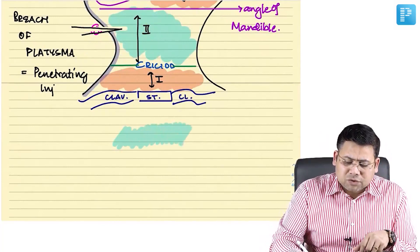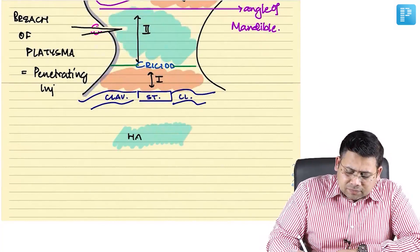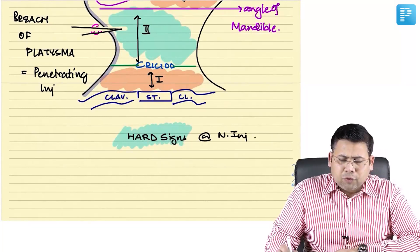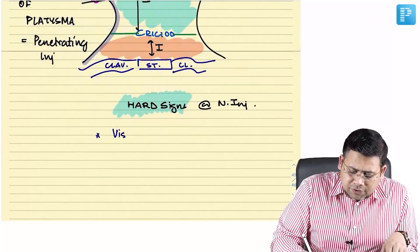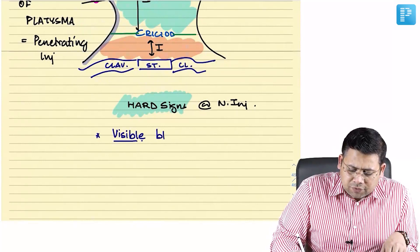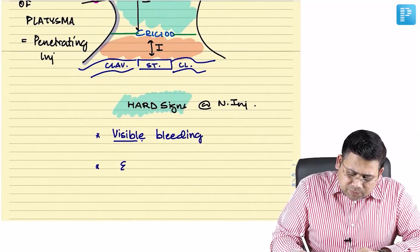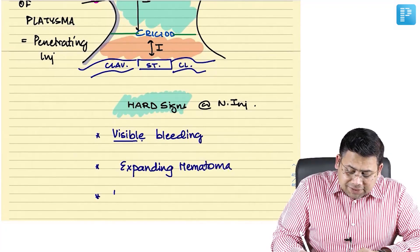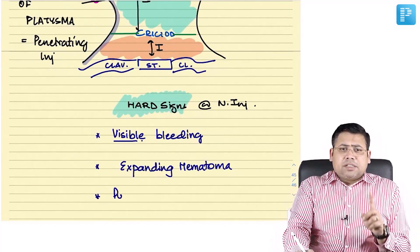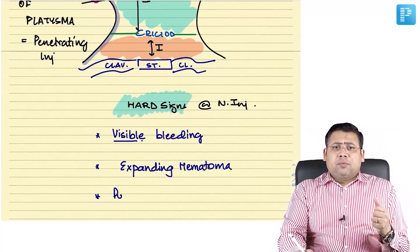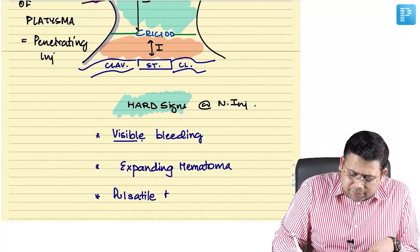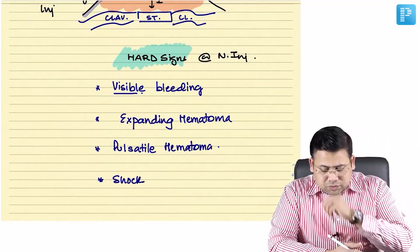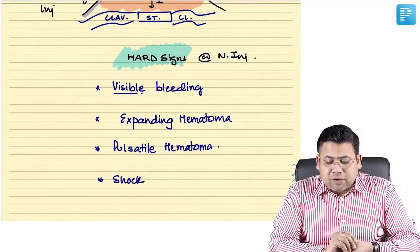Signs of vascular injury are classified as hard signs or soft signs. Hard signs are direct signs indicating vascular injury. They include: visible bleeding, expanding hematoma, pulsatile hematoma — which is associated with arterial injury or pseudoaneurysm — and the patient being in shock.